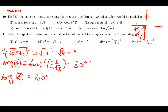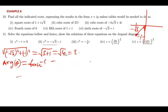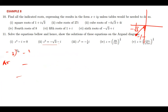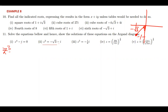After finding the argument, we can find the k values. But first, let us write the complex number in polar form. The argument is 210 degrees and the magnitude is 2, so z to the power 3 equals 2 times (cos 210° + i sin 210°).